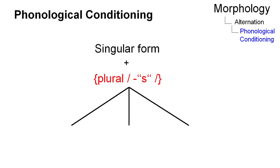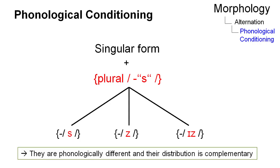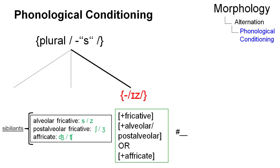In phonological conditioning, the sound structure determines the shape of a particular allomorph. An example of phonological conditioning in present-day English is the formation of regular plural nouns, where one of three morphs is attached to the singular form. The suffixes are phonologically different and their distribution is complementary. The choice of allomorph can be predicted on the basis of the final stem consonant.